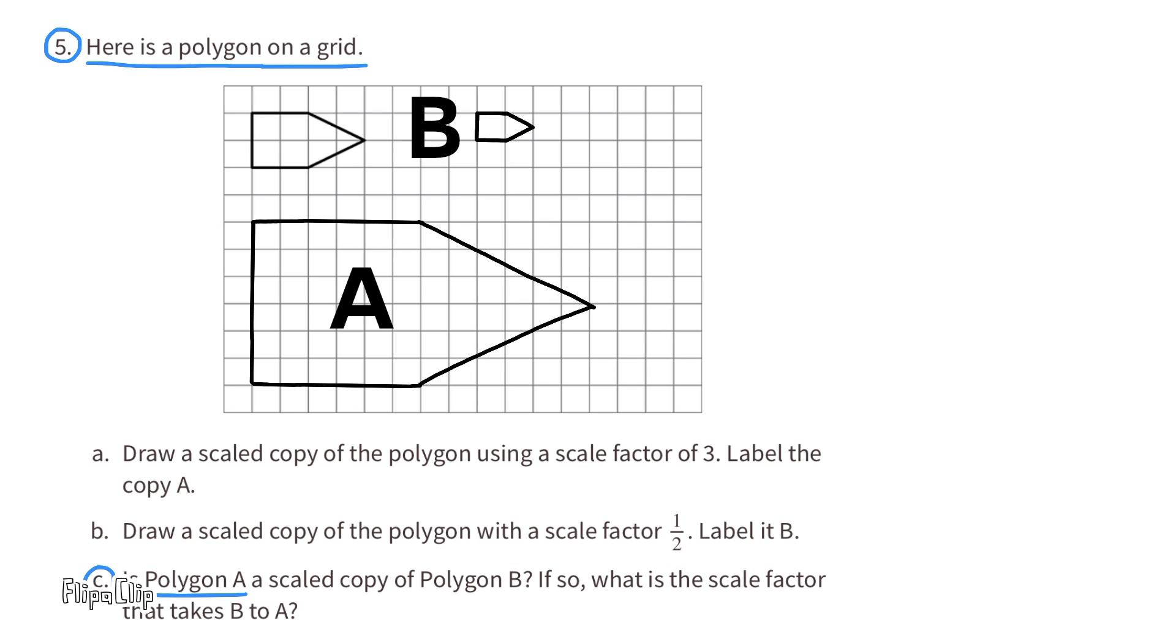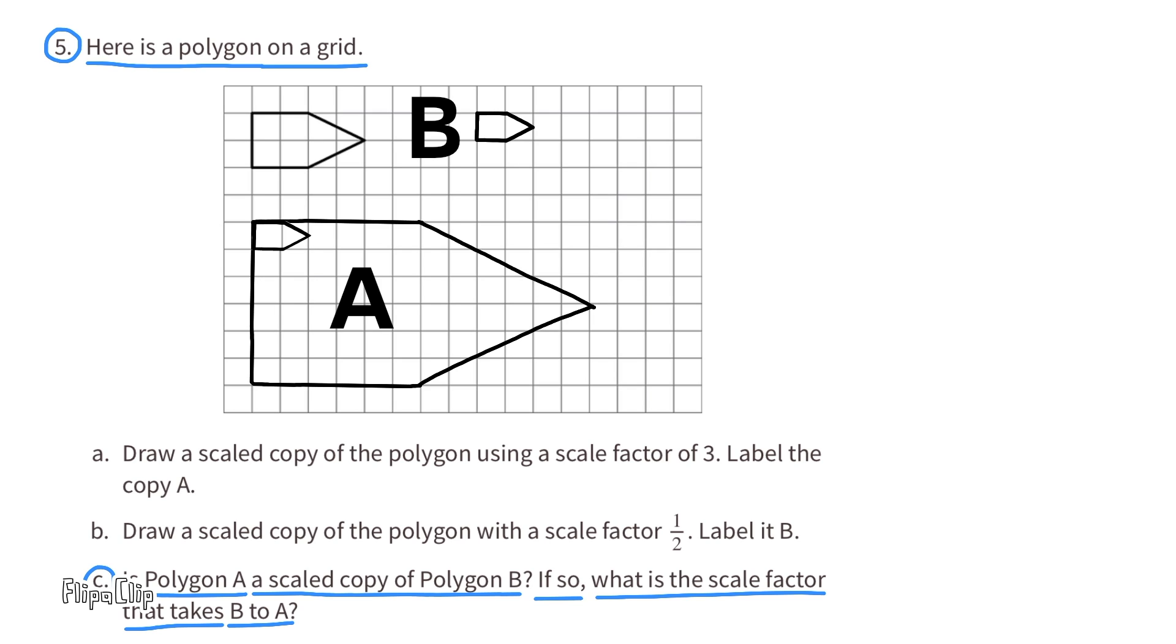C. Is polygon A a scaled copy of polygon B? If so, what is the scale factor that takes B to A? Figure A can be considered a scaled copy of figure B, because all the side lengths on figure A are exactly 6 times longer than all the side lengths on figure B. The scale factor is 6.